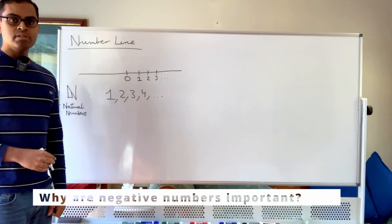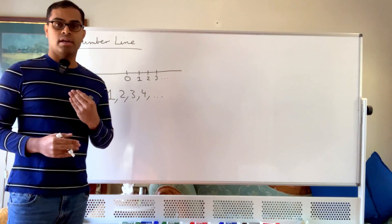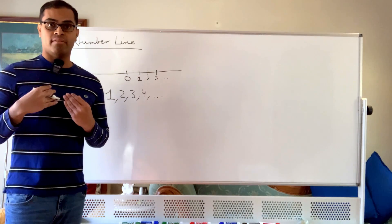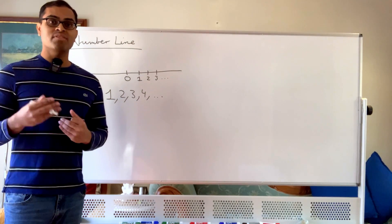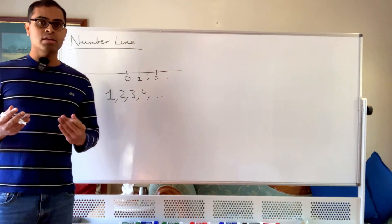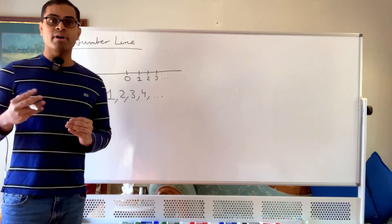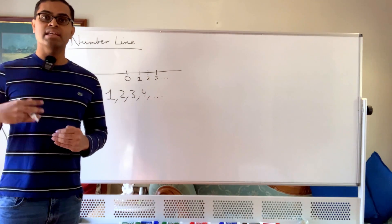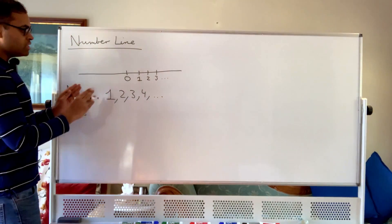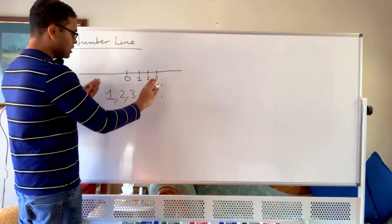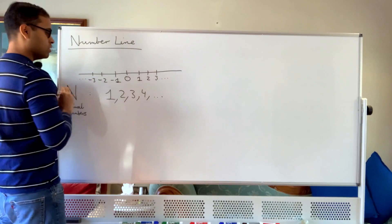We also have negative numbers, which are also pretty important. For example: if I have seven apples and I give five apples to you, seven minus five is two — that's what I have left over. But if I have seven apples and I give nine apples to you, seven minus nine is negative two, meaning I need two more apples to actually give you nine. So negative is kind of the opposite of positive. On the number line, going right gives the positive numbers 1, 2, 3; going left gives the negative numbers: minus 1, minus 2, minus 3, continuing indefinitely.